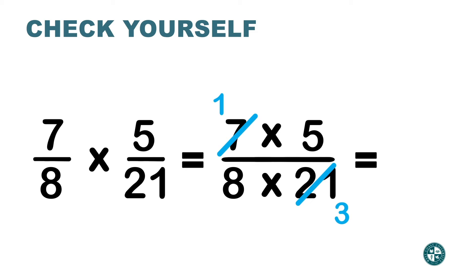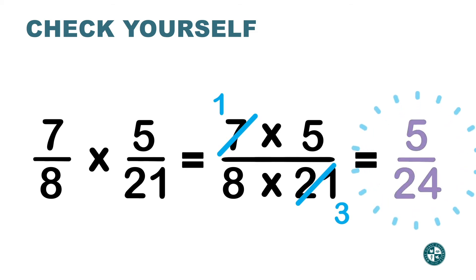Between 5 and 8, there's no number other than 1 that can divide both, so I'm not crossing them out. Now multiply top with top: 1 times 5 is 5, and bottom with bottom: 8 times 3 is 24. I don't need to check if I can simplify more because I simplified before multiplying — doing cross cancellation.